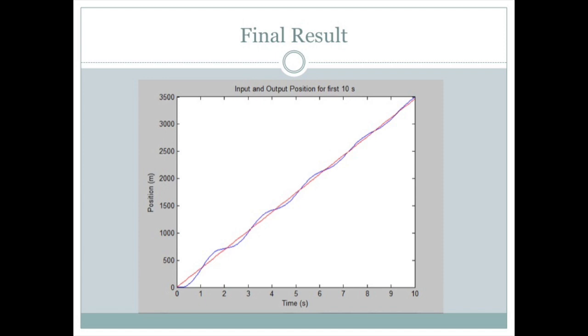My name is Ann Lai, and I will be talking about the final result. As seen below, the graph shows the input and the output position for the first 10 seconds. The red shows the input position, and the blue shows the output position. As you can see, the blue oscillates a little bit at first, and that is shown in the previous error graph. As time increases, the blue oscillates less, and therefore the error gets smaller.